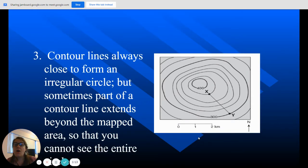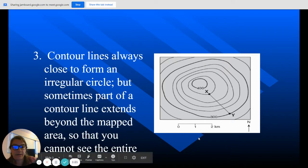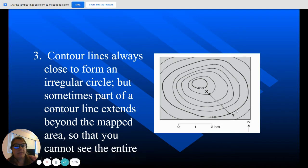So contour lines always close to form an irregular circle, but sometimes part of the contour line extends beyond the map area so you cannot see the entire line. So that's another one of our rules, that the lines either make a circle, or they're so big that the lines kind of have to go off the map. You can picture this: if you were to make the map bigger, you would see that these lines kind of connect to each other and they would make a big circle.